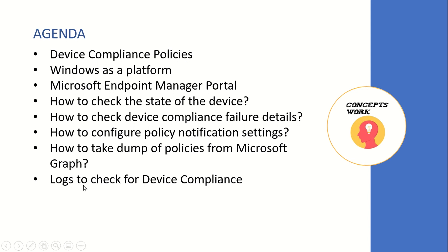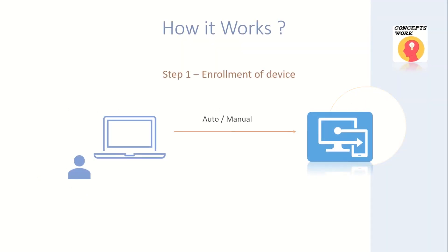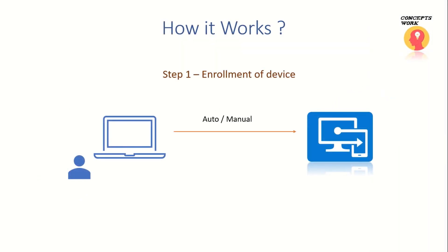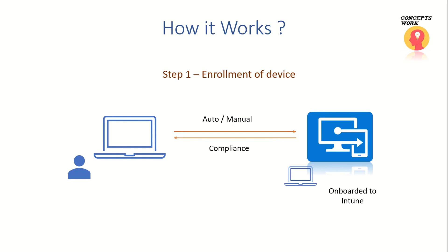When it comes to troubleshooting, which logs need to be checked on a specific device. Before we go ahead and see everything in action, let's understand fundamentally how it is going to work. Step number one will always be enrollment of the device — making sure the device is onboarded to Intune. This could be an automatic enrollment or the user can enroll the device manually. Once the device is onboarded to Intune, the next step will be verifying the device compliance state.